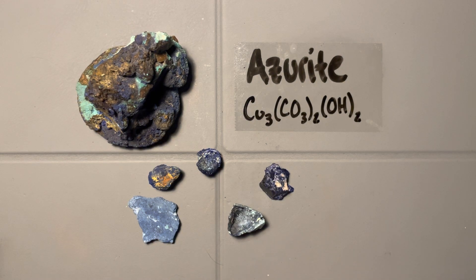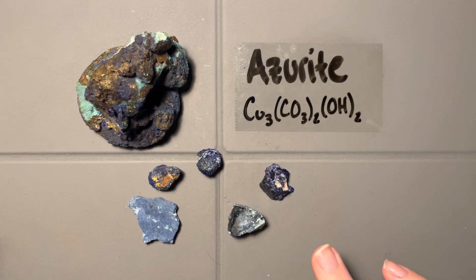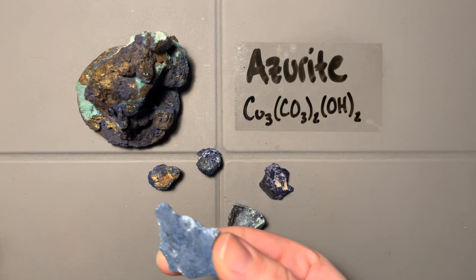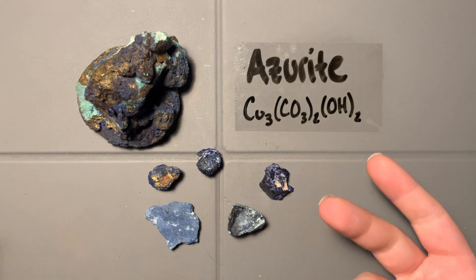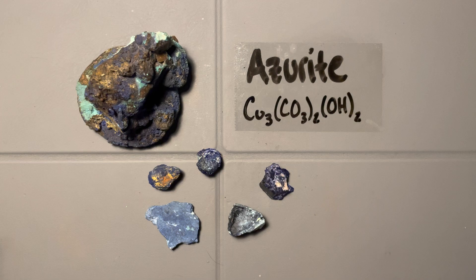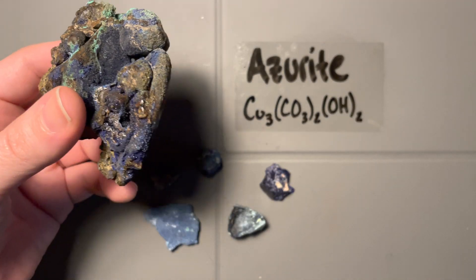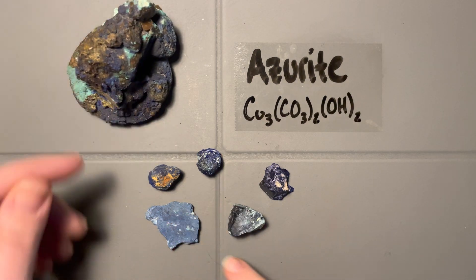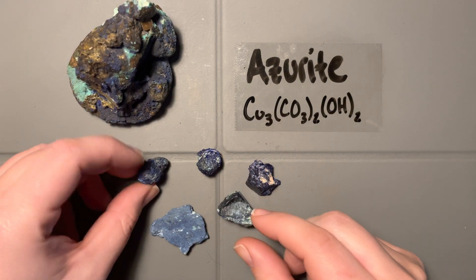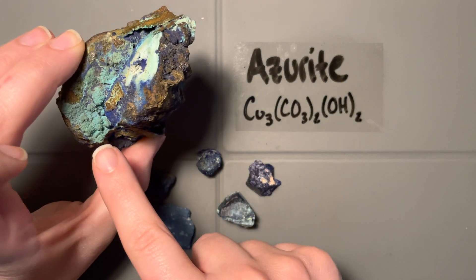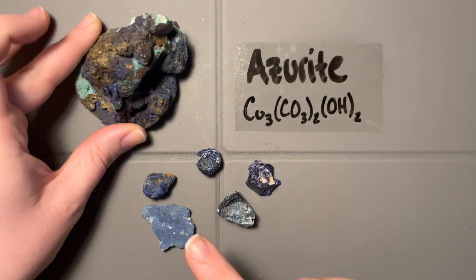Our last carbonate mineral is another copper carbonate — that's going to be azurite. The name likely means something close to blue, and you'll notice all of these blue mineralizations that we see here are azurite.